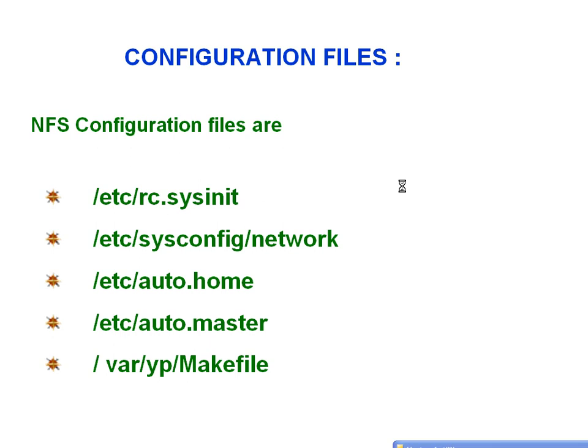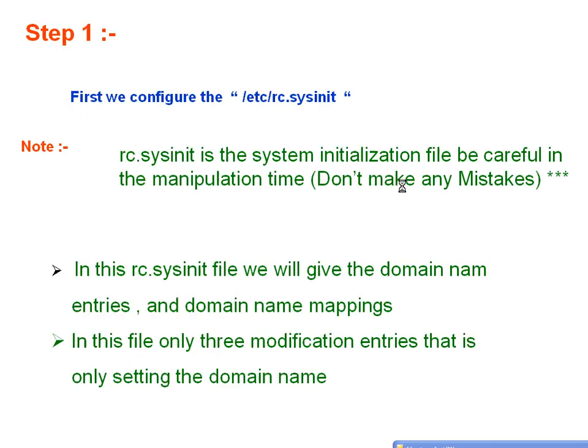Now let us have a detailed description on NIS configuration. The configuration files involved are: /etc/rc.sysinit, /etc/sysconfig/network, /etc/auto.home, /etc/auto.master, and /var/yp/Makefile. Step one in this process is to configure /etc/rc.sysinit.